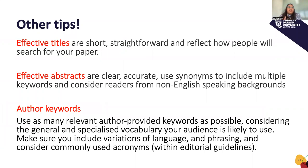Some other tips: effective titles are short, straightforward, and reflect how people will search for your paper. Effective abstracts are clear and accurate — use synonyms, include multiple keywords, and consider readers from non-English speaking backgrounds. For author keywords, use as many relevant keywords as possible, considering the general and specialized vocabulary your audience is likely to use, including variations of language and phrasing and commonly used acronyms within editorial guidelines.